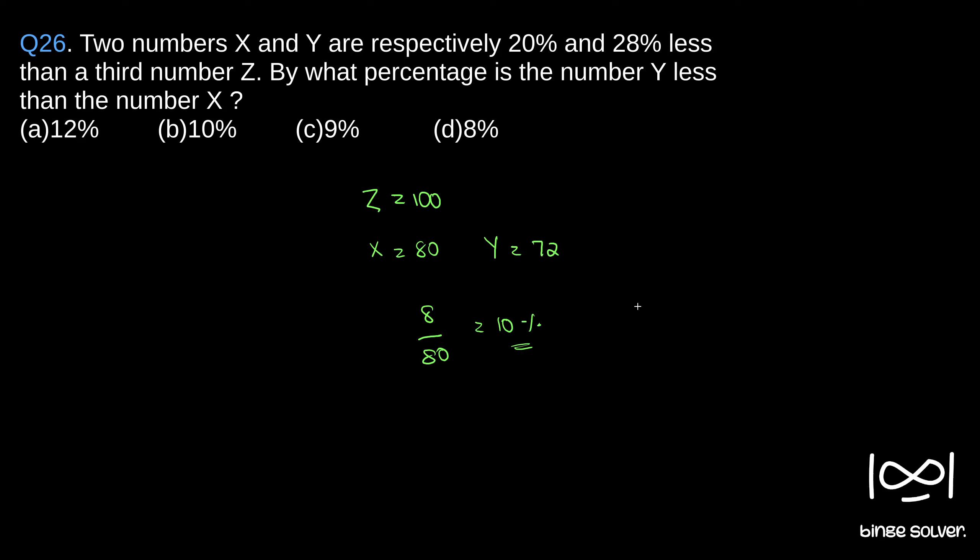The answer here, solution to question 26, is B. Just keep one thing in mind: whenever a question asks what percentage A is less than B, our base has to be B. So the difference divided by our base should be B. What comes after 'less than' should be our base. Here it should not be 72, as you will get a different answer if you use that.